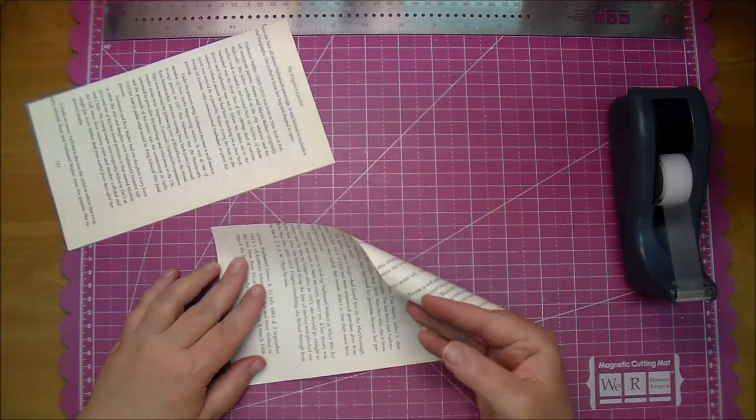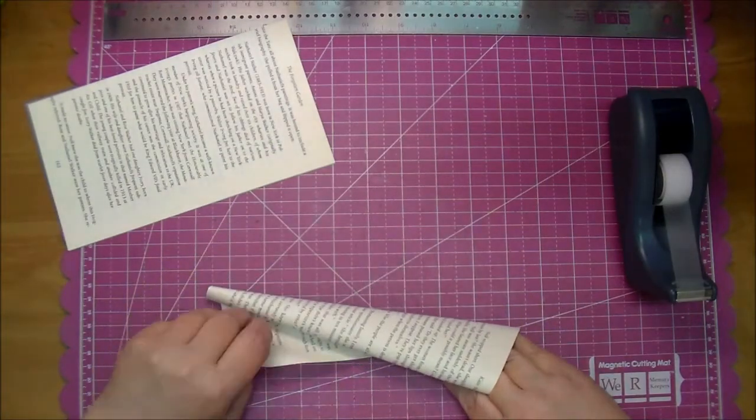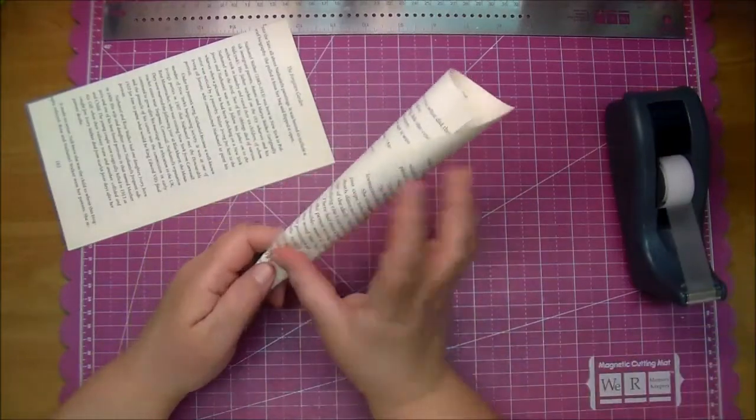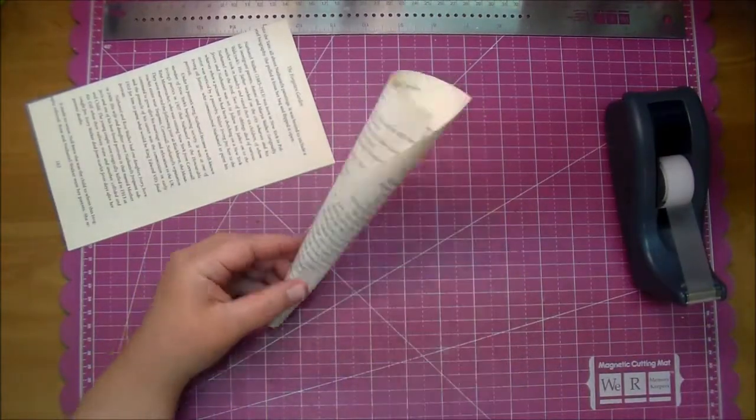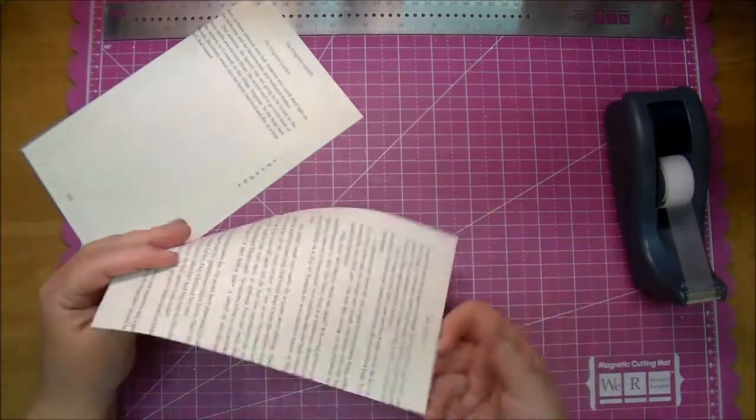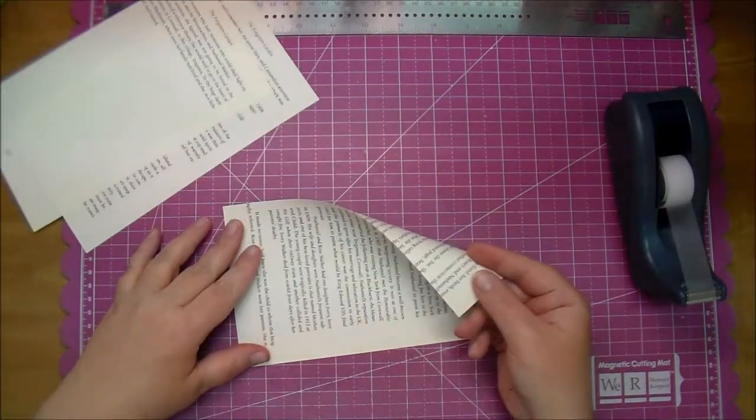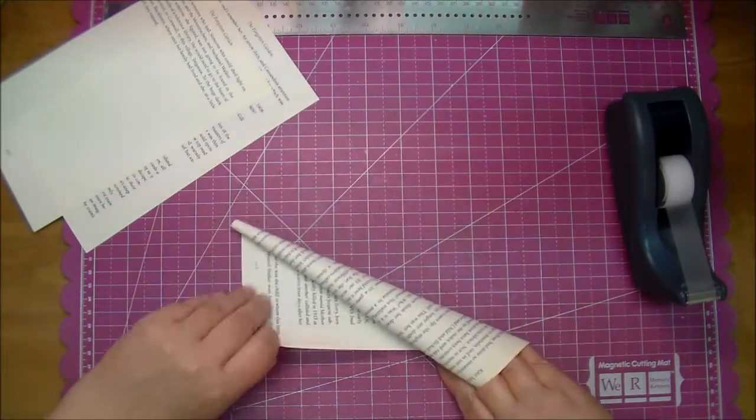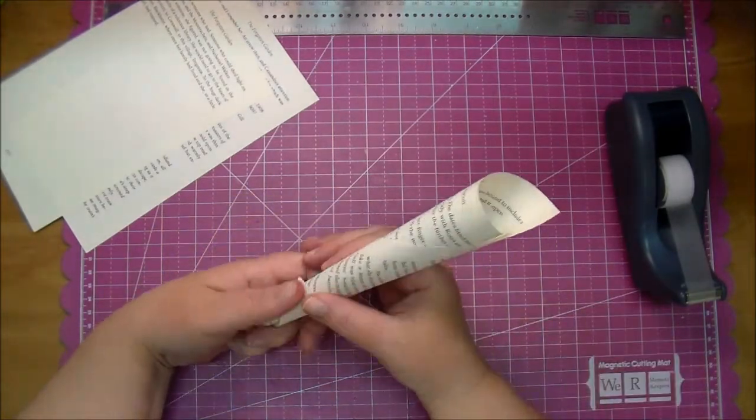The scotch tape will just hold it in place because we will be stapling it a little bit later. So again super easy, just grabbing the top right, rolling it around and then wrapping the bottom portion around that.